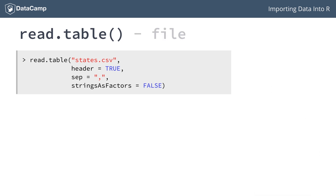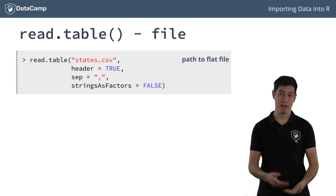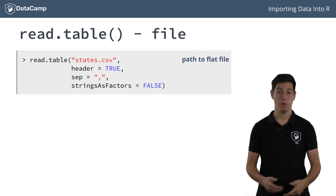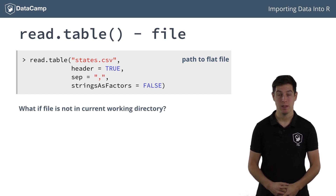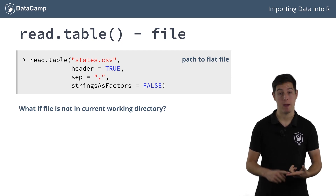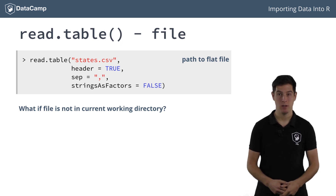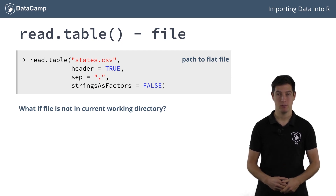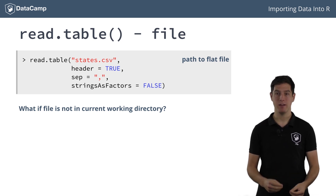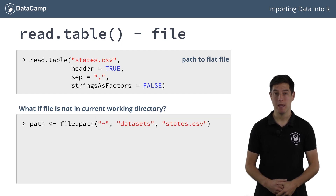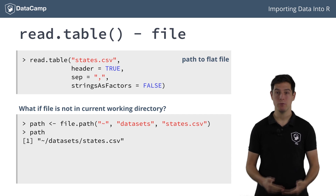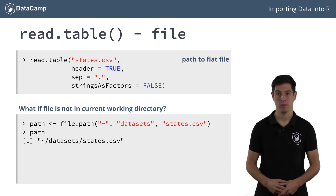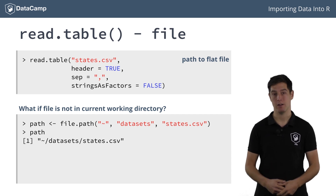The first argument of read.table is the path to the file you want to import. If the file is in your current working directory, simply passing the file name as a character string works. If your file is located somewhere else, things get tricky. Depending on the platform — Linux, Windows, Mac — file paths are specified differently. To build a path in a platform-independent way, you can use the file.path function. Suppose our states.csv file is located in the datasets folder of the home directory; you can use file.path like this. On Mac the resulting path looks one way, but for Windows the character string will be different. This path can then be used inside read.table to point to the correct file.